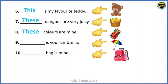Next: ___ is your umbrella. We are talking about one umbrella — that is singular. So we write 'This is your umbrella.' Next: ___ bag is mine. We are talking about one bag — that is singular. So we write 'This bag is mine.'